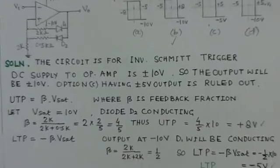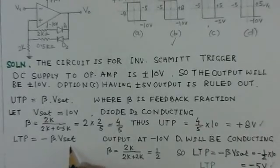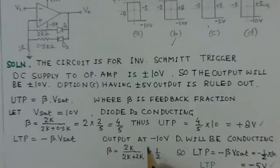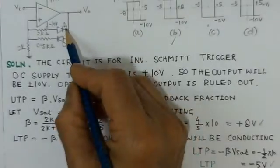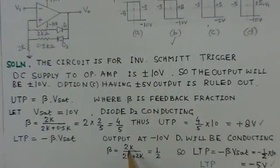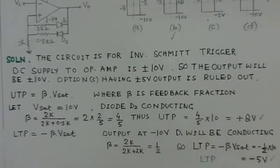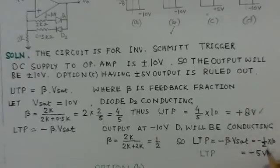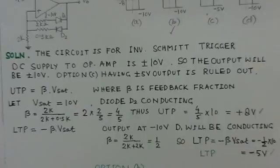The LTP point is minus beta multiplied by V saturation. When the output is minus 10 volts, diode D1 is conducting and D2 is off, so the other feedback path applies. The feedback fraction beta equals 2K divided by (2K plus 2K), which is one half. Therefore LTP equals minus (1/2) × 10 = minus 5 volts.